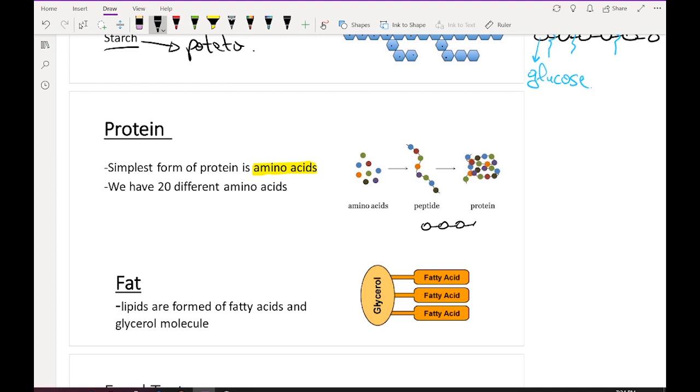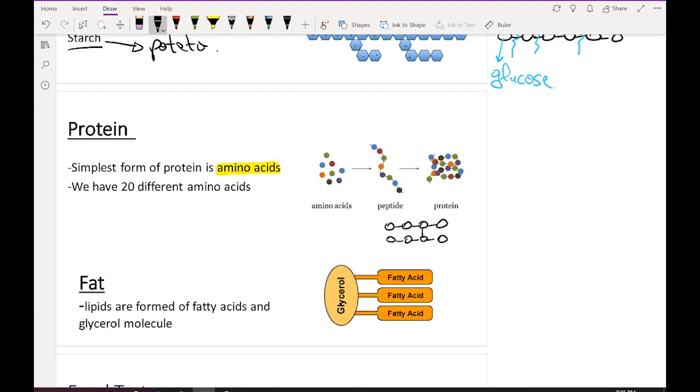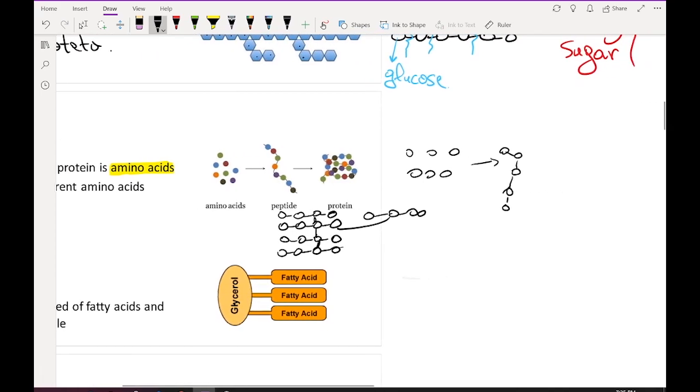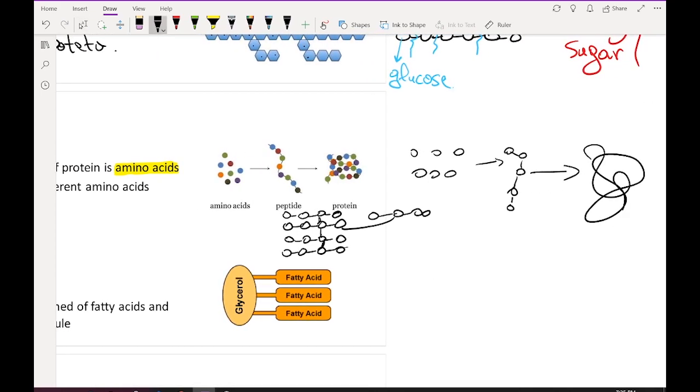More than one amino acid forms a peptide or dipeptide. More than one dipeptide forms a polypeptide. And then the complex form of polypeptides is protein. So simple form is amino acid, linked to peptide, and the complex form is protein.